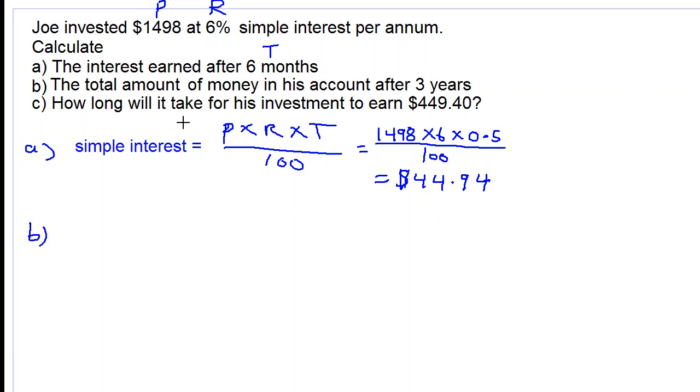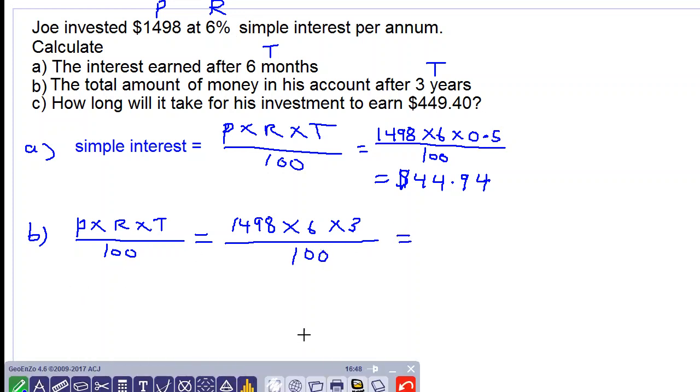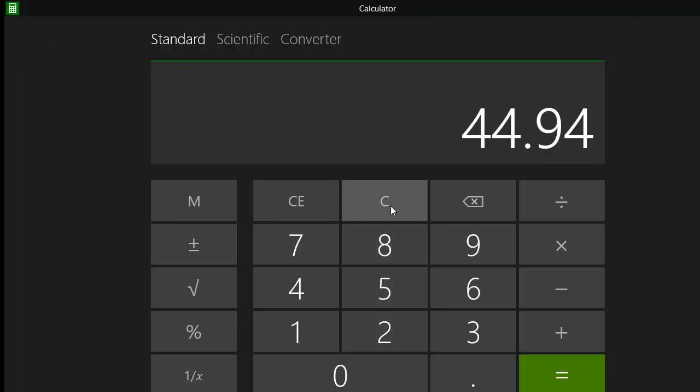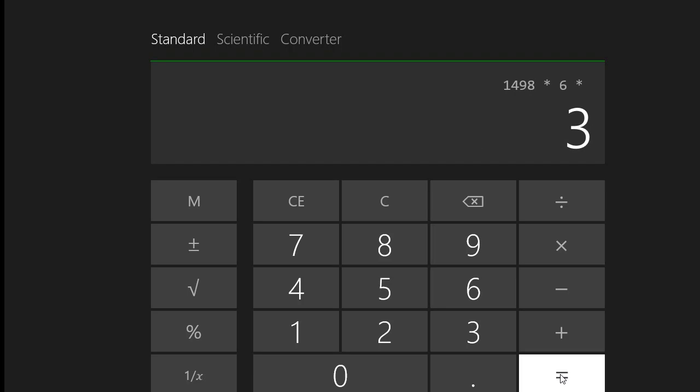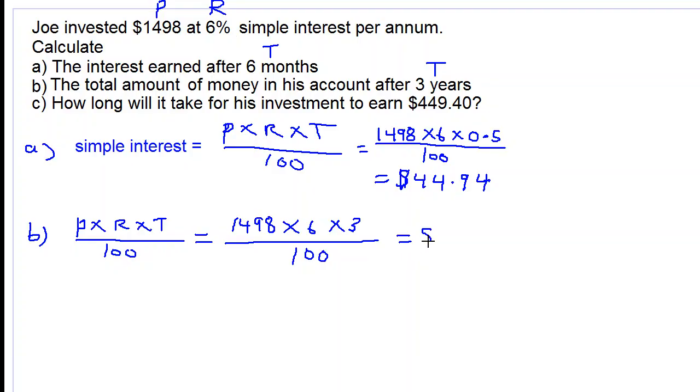Let's move on to part B: total amount of money in his account after three years. So we first calculate the simple interest by saying principal times rate times time over 100. This will give us 1498 times 6 times 3 years, divided by 100. We get 1498 times 6 times 3 equals, divided by 100, $269.64.